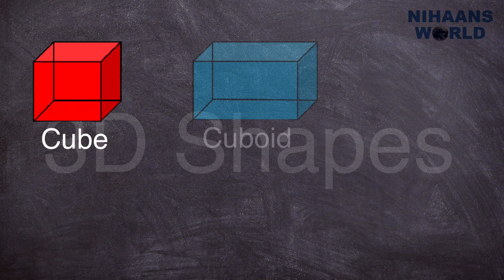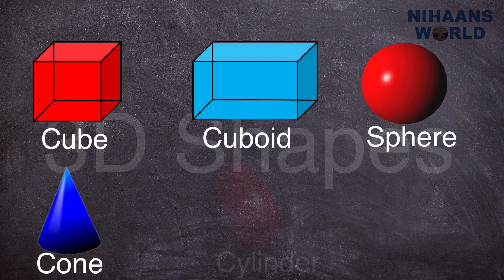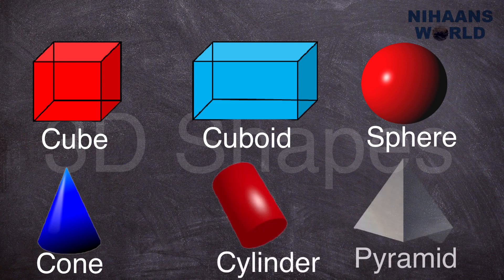3D shapes recap: cube, cuboid, sphere, cone, cylinder, pyramid.